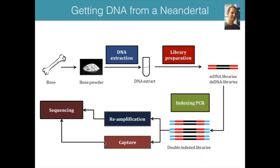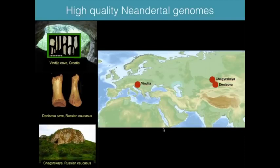Massive improvements in molecular methods over the past years have allowed optimization of ancient DNA yields. Matthias Meyer's group has worked tirelessly on every step — reducing contamination and selectively retrieving molecules showing evidence of deamination, thereby enriching for truly ancient DNA. Computational methods also ensure that the ancient molecules retrieved can actually be included in analysis. Using these approaches, over the last 10 or so years we have sequenced to high coverage the genomes of three Neanderthals.